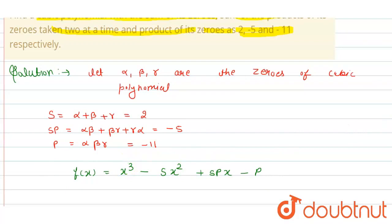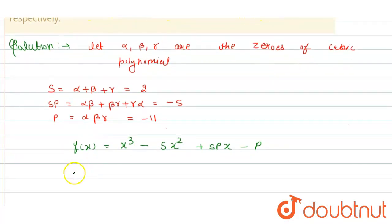If I simplify this, f(x) equals x³ minus—sum, that is alpha plus beta plus gamma—of x². Plus SP, that is alpha beta plus beta gamma plus gamma alpha, multiplied by x. And minus alpha beta gamma.